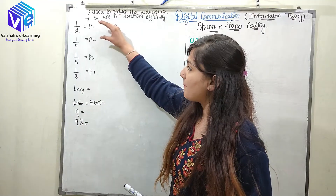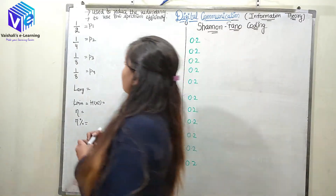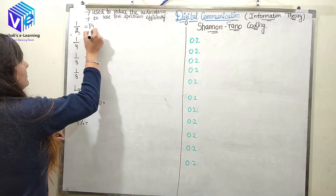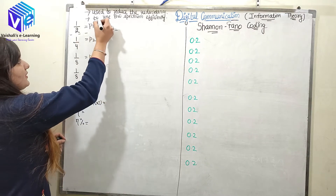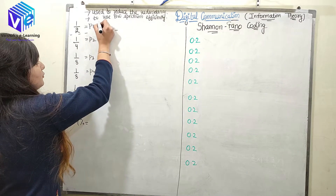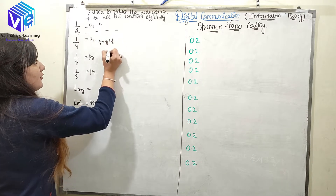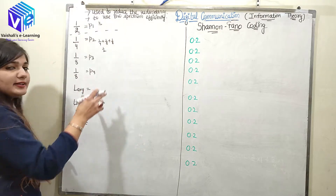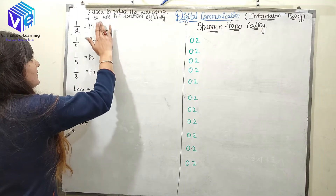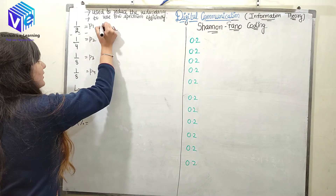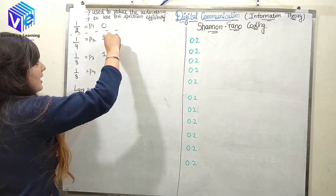After that, I have to club the upper part and lower part such that the upper part is equal to the lower part. If I put 1/2 in one group and 1/4, 1/8, 1/8 in the next group, the upper probability is 1/2 and the lower is 1/4 + 1/8 + 1/8 = 1/2. So the upper and lower groups have the same probability. Now I'll assign 0 to the upper cluster and 1 to the lower cluster.